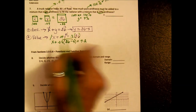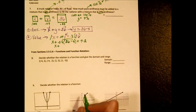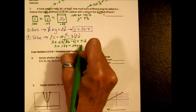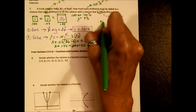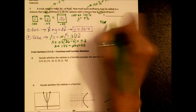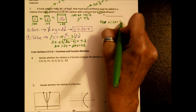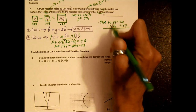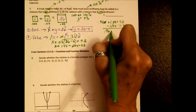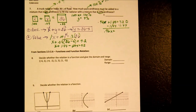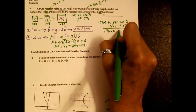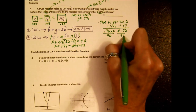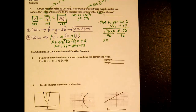Substituting Y: 1X plus 0.04 times (36 minus X) equals 7.2. Distributing: X plus 1.44 minus 0.04X equals 7.2. Combining like terms: 0.96X plus 1.44 equals 7.2. Subtract 1.44 from both sides: 0.96X equals 5.76. Dividing by the coefficient gives X equals 6 liters of pure antifreeze.